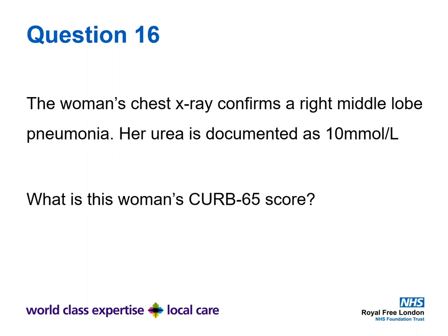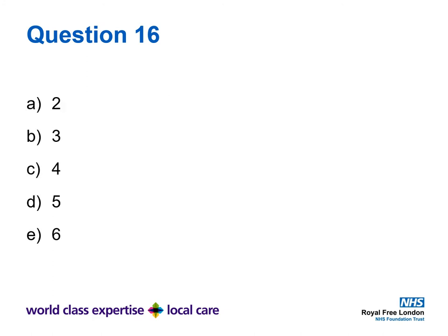Question sixteen. The woman's chest x-ray confirms a right middle lobe pneumonia and her urea is 10 millimoles per litre. What is this woman's CURB65 score? Is it A) 2, B) 3, C) 4, D) 5, or E) 6?